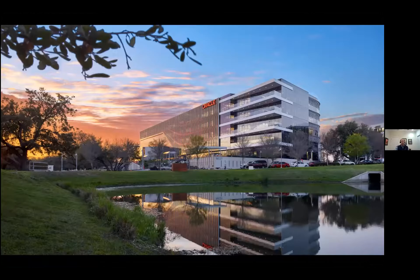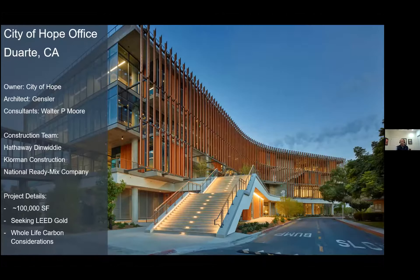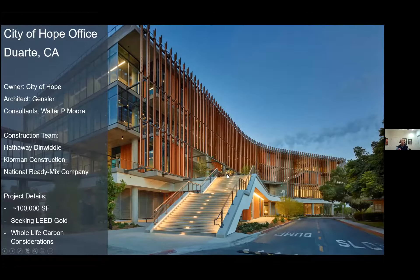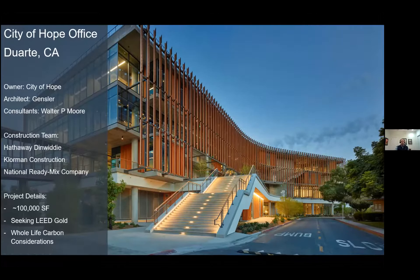The next project is a 100,000 square foot office building for a hospital outside Los Angeles — a City of Hope project designed by Gensler. It has whole-life carbon considerations and is seeking LEED Gold. A lot of the circulation is outside, the roof is covered with PV panels, it's fully electrified, and it's on the California grid. This idea of whole-life carbon led to doing LCA for this concrete-framed office building in a seismic zone.